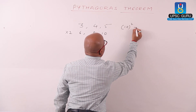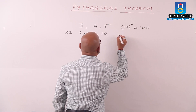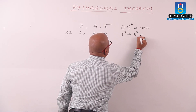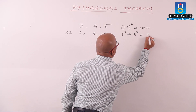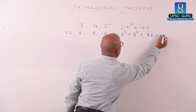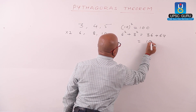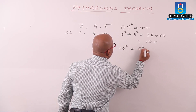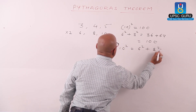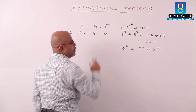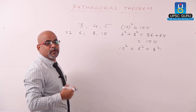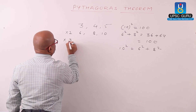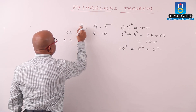Let us check: 10 squared equals 100. Six squared plus eight squared equals 36 plus 64, which also equals 100. Therefore 10 squared equals 6 squared plus 8 squared, so 6, 8, and 10 gives us one more Pythagorean triplet. If we multiply by 3, we get 9, 12, and 15.